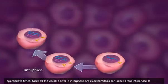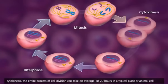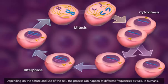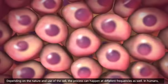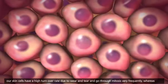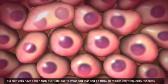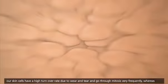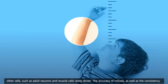From interphase to cytokinesis, the entire process of cell division can take on average 10 to 20 hours in a typical plant or animal cell. Depending on the nature and use of the cell, the process can happen at different frequencies as well. In humans, our skin cells have a high turnover rate due to wear and tear and go through mitosis very frequently, whereas other cells, such as adult neurons and muscle cells, rarely divide.